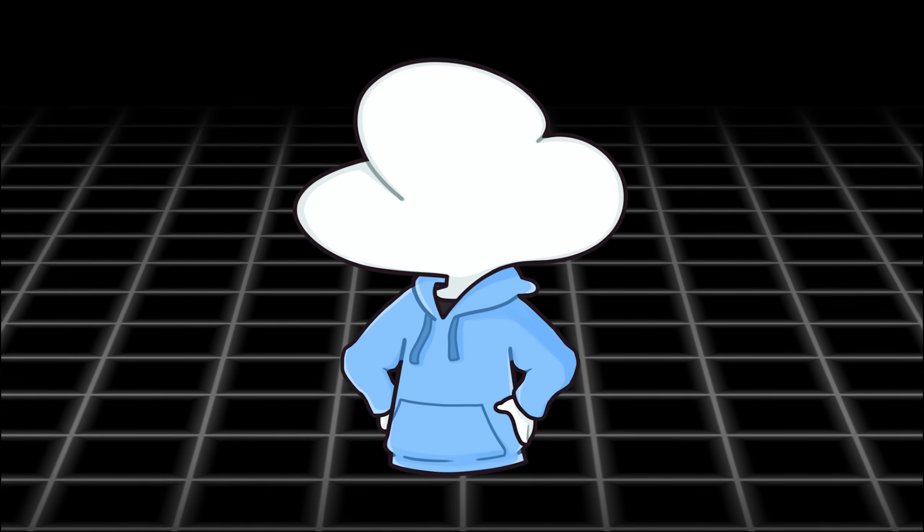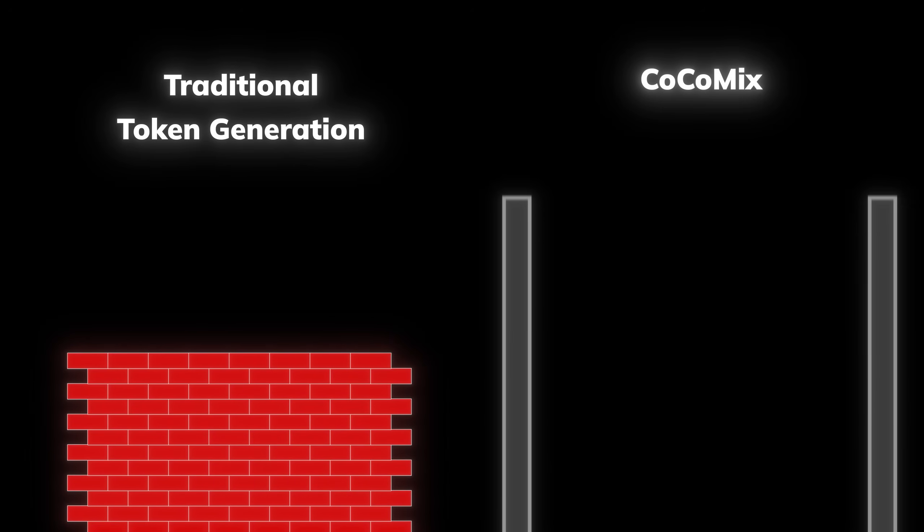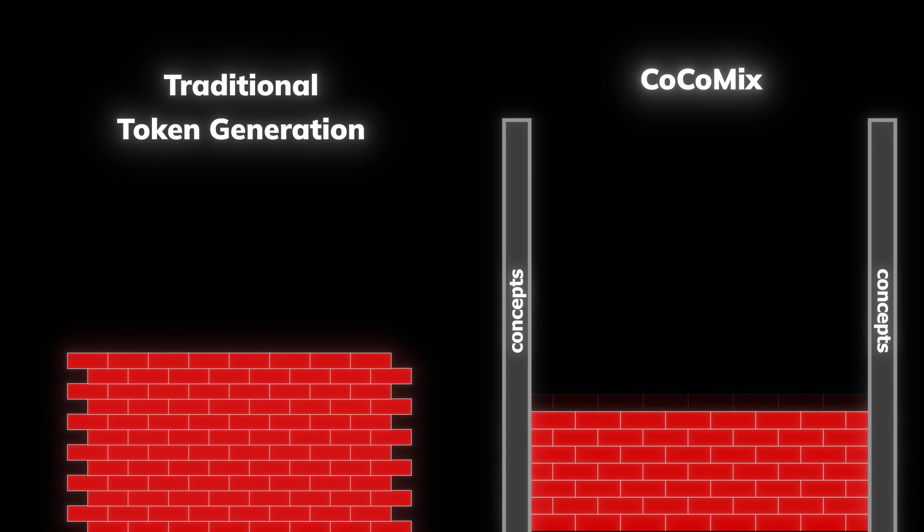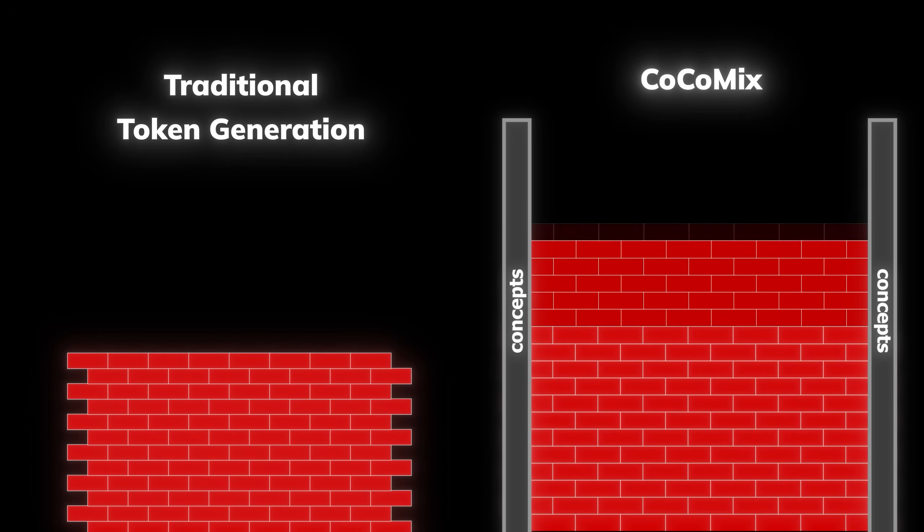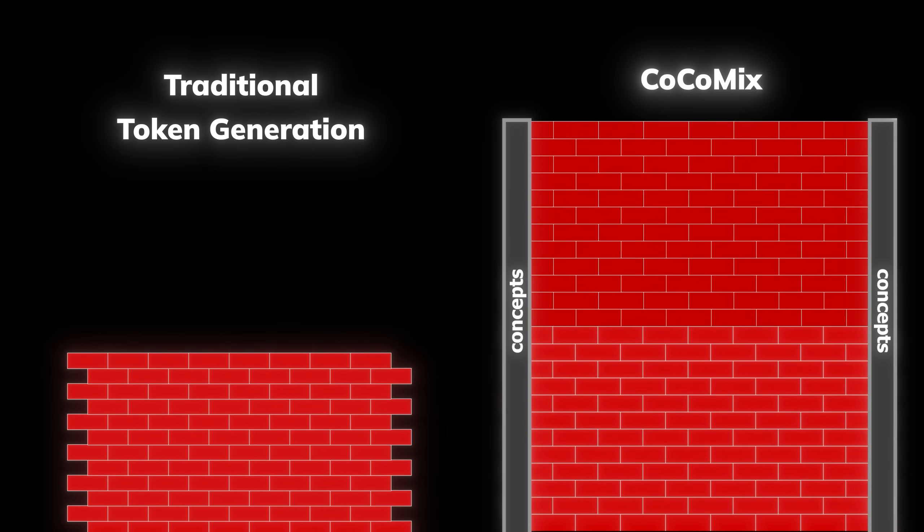To explain that simply, the traditional way of generating words is kinda like building a house with only bricks. But with Cocoa Mix, it's like you have a steel beam to help guide and support your bricks better, which makes it have structural integrity so everything looks consistent at the end.